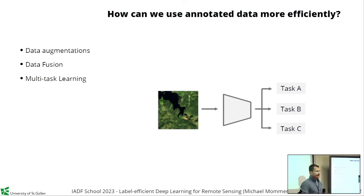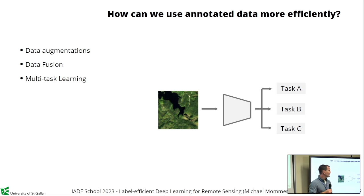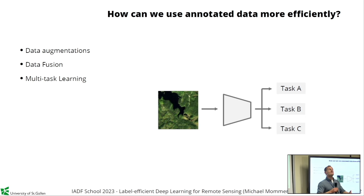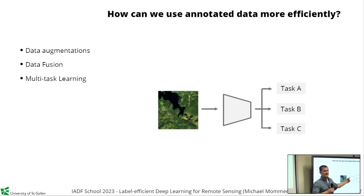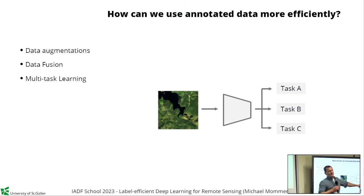Another way is data fusion — you have not only imaging data but also SAR data and all kinds of data available, so you combine different data modalities and run them through a model. There's also multitask learning. Instead of only training your model to solve one task, you set it up to learn two or more tasks based on the same data at the same time. The model will learn richer, more important information by learning those additional tasks, which is beneficial for your primary task too.